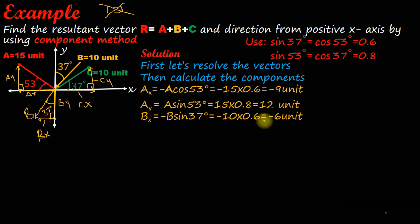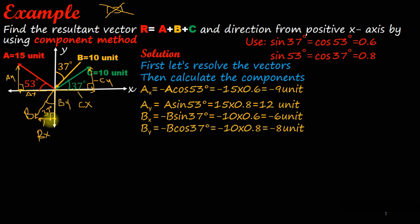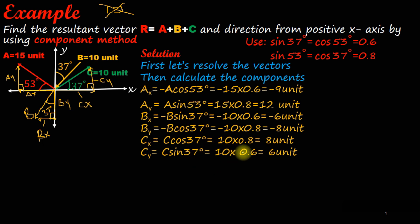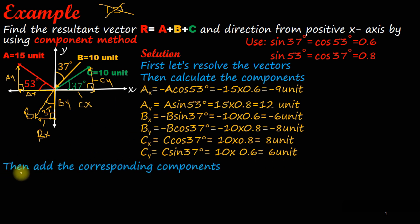Bx equals minus 10 times 0.6, giving minus 6 meters. By equals minus B cos 37 degrees, which equals minus 8 meters. Cx equals 10 times 0.8, which is 8 units. Cy equals sin 37 degrees, giving 6 units positive.